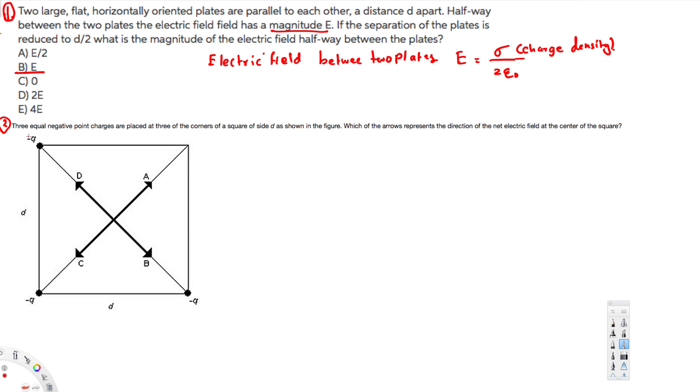And let's do the second question. The question is asking: three equal negative point charges are placed at three of the corners of a square of side d, as shown in the figure. Which of the arrows represents the direction